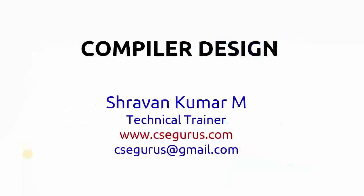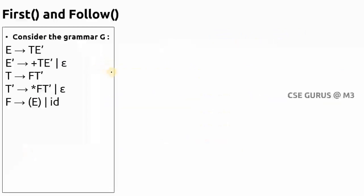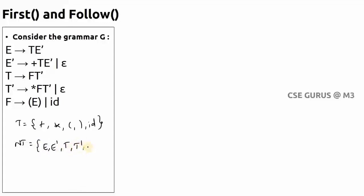Welcome to the video lectures on compiler design. Now we'll see what First and Follow sets are for this grammar. The terminals are plus, star, open brace, close brace, and ID. The non-terminals are E, E-dash, T, T-dash, and F. Epsilon is neither a terminal nor a non-terminal. I'll directly take this grammar and explain how to find First and Follow easily without writing the full definitions.